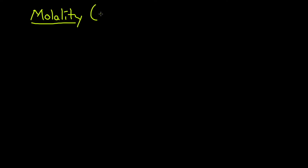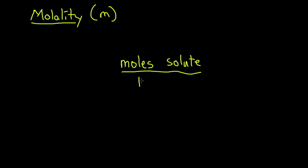The next unit of measurement is molality, marked by lowercase m. The units are moles of solute over kilograms of solvent — so we're no longer talking about total solution volume, but the mass of just the solvent. Here's an example: a sulfuric acid solution containing 571.4 grams of H2SO4 per liter of solution has a density of 1.329 grams per centimeter cubed. Calculate the molality of H2SO4 in this solution.